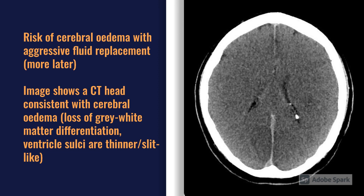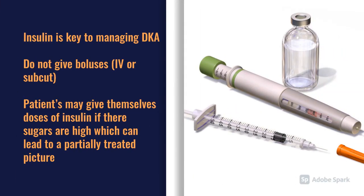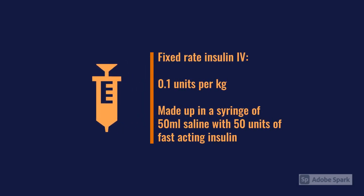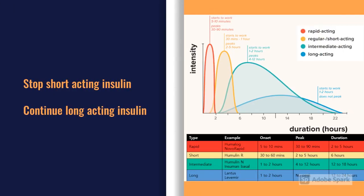IV insulin is the key. We don't bolus insulin — some practitioners and patients think we do, and patients may give themselves subcutaneous insulin prior to arriving, which can confuse the picture. We give a fixed-rate insulin infusion, normally weight-based at 0.1 units per kilo — typically 50 units of Apidra in 50 mL of saline, as per local guidelines. The key point is that you stop their short-acting insulin but you must continue their long-acting insulin, such as Lantus, alongside the fixed-rate infusion.